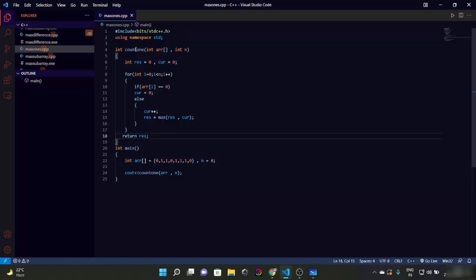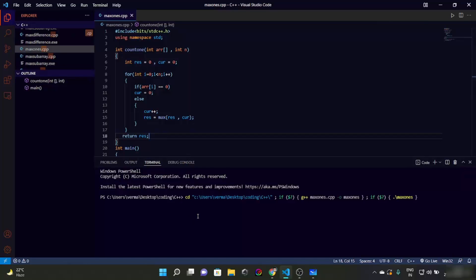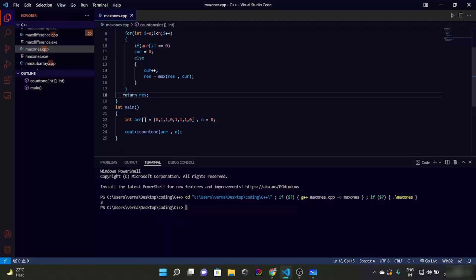So that was all for this code, let's try and run it. Output is 3, that is the correct output. Let's check it for a corner case as well: let's have 1, 1, 1, 1 and we will have n as 4.